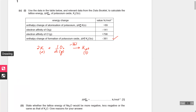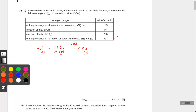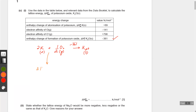The first step is atomization. What you would do is atomize potassium first. So there would be two potassiums, but this time they are going to be gaseous, plus half an oxygen gas molecule.